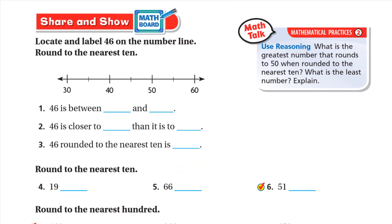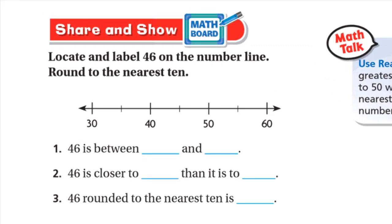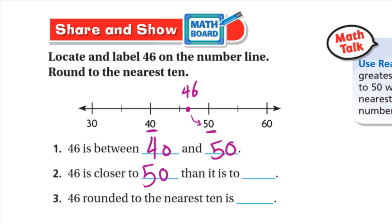Now let's solve the Share and Show problems. Locate and label 46 on the number line and round to the nearest 10. Here is 40, here is 50, and 45 is the midpoint. So 46 is just after the midpoint — it's between 40 and 50 but closer to 50. So 46 rounded to the nearest ten is 50.